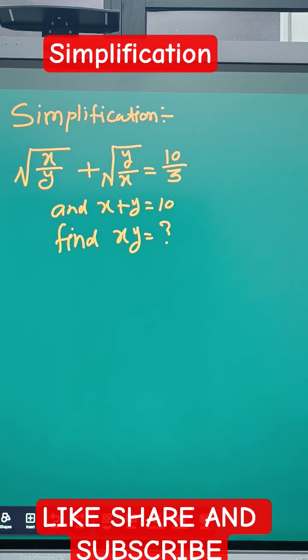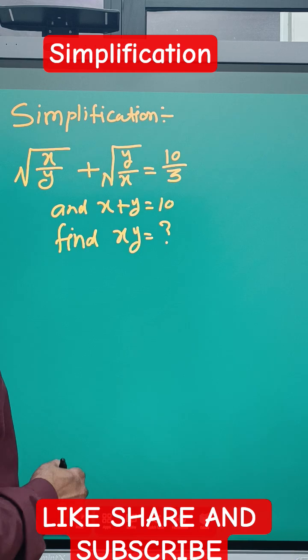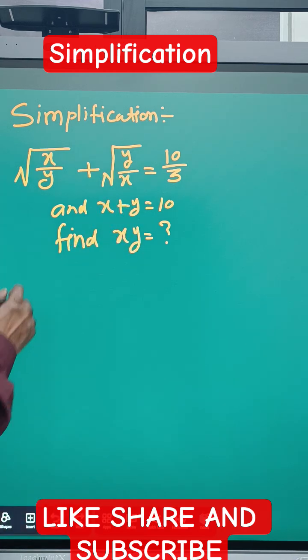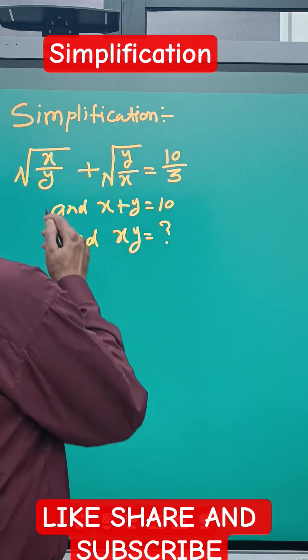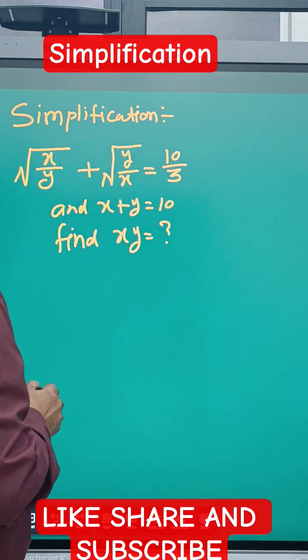Hello everyone, here's a simplification problem. We have √(x/y) + √(y/x) = 10/3, and we're given that x + y = 10. We need to find the value of xy. It looks difficult, but we'll solve it with a simple approach.